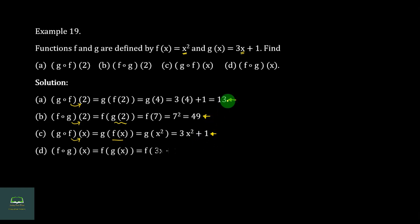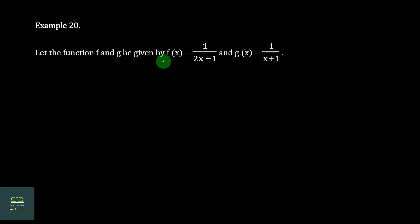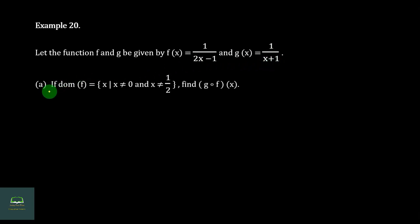F∘G of x — each is larger than the one before. If you can write the sub-expressions, then f(x) is equal to 1 by 2x minus 1, and g(x) is equal to 1 by x plus 1.